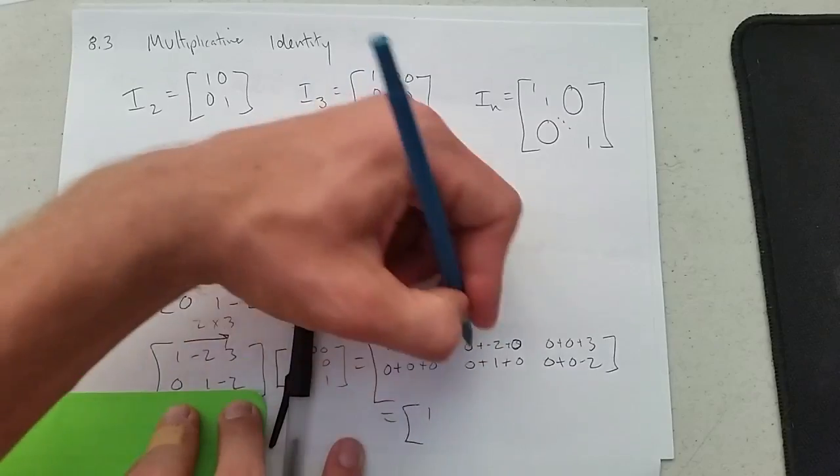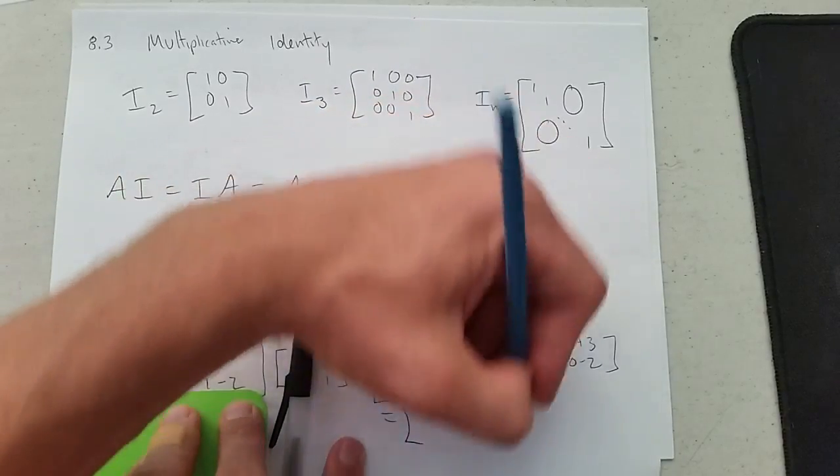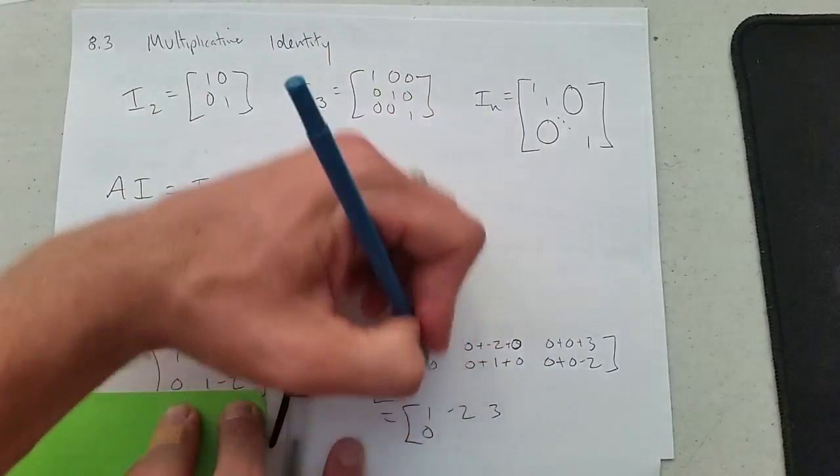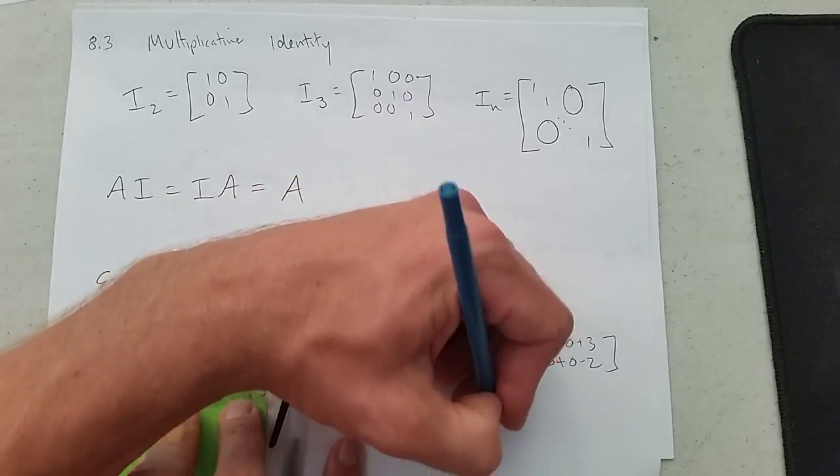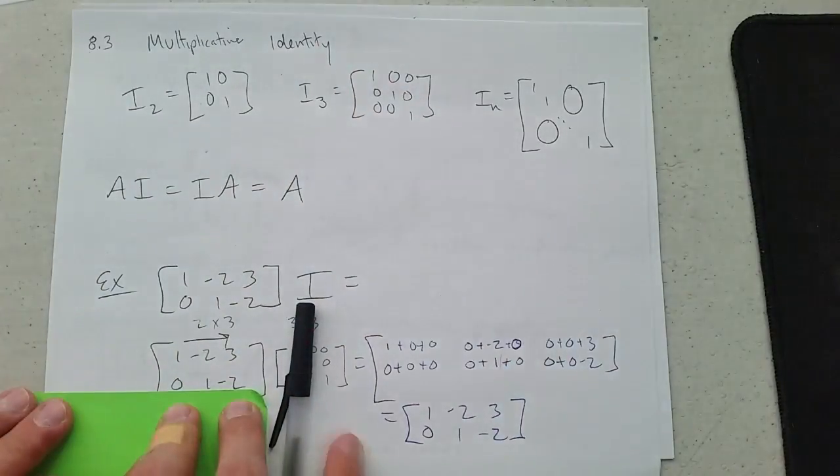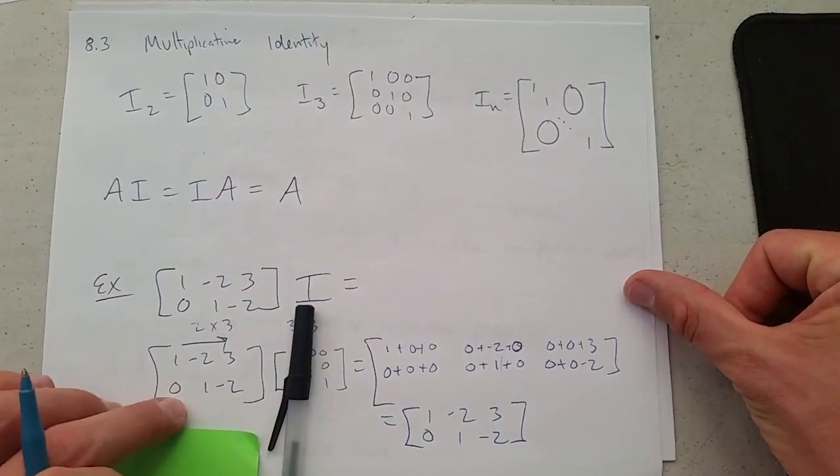So we have 1, negative 2, 3, 0, 1, negative 2. And that is what we started with.